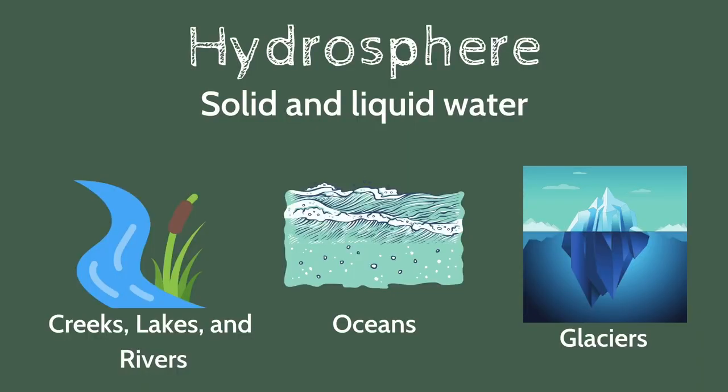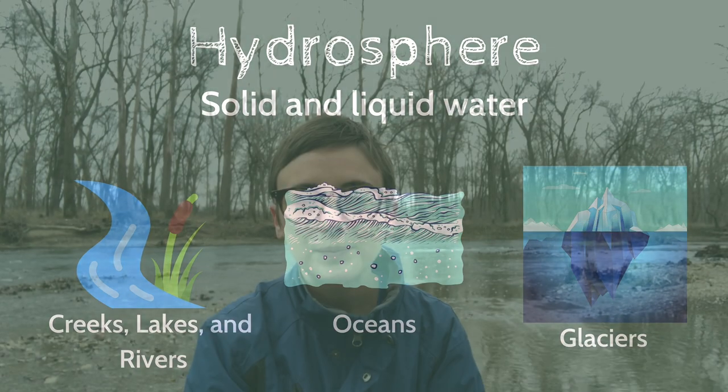The next sphere we're going to talk about is the hydrosphere. The beginning of the word, hydro, means water. So the hydrosphere contains all of the water on earth and its different states. Behind me here is a creek — this is fresh water, and it is liquid water. Some other examples of fresh water include rivers, ponds, and lakes. There's also water that's inside of the earth, such as groundwater.